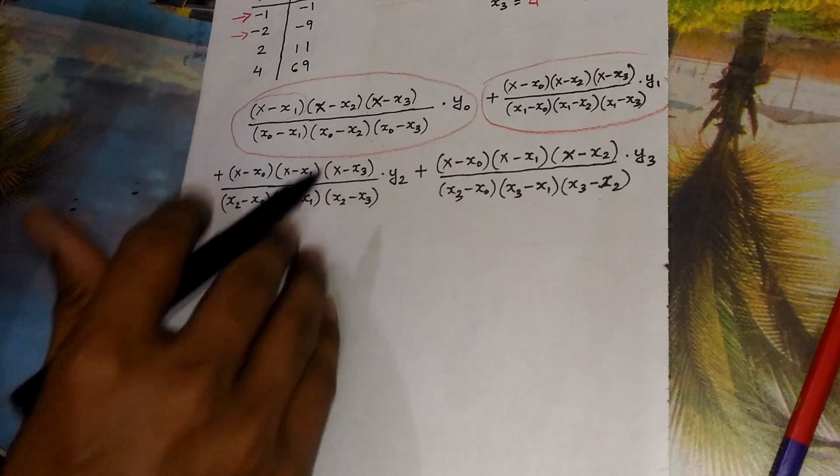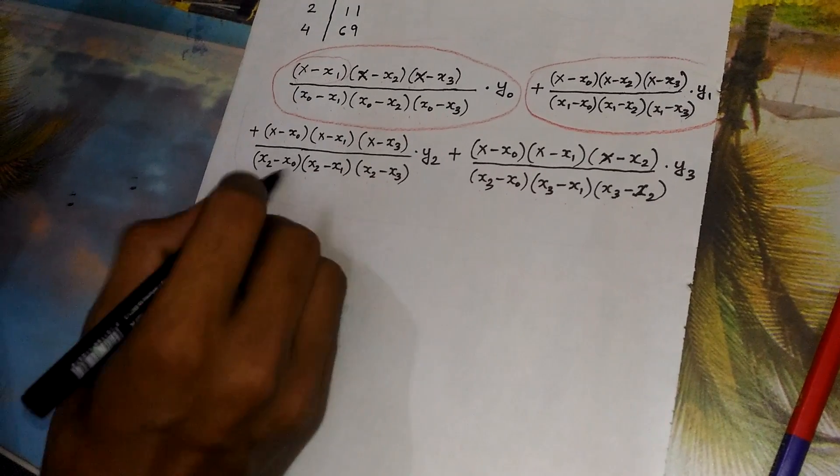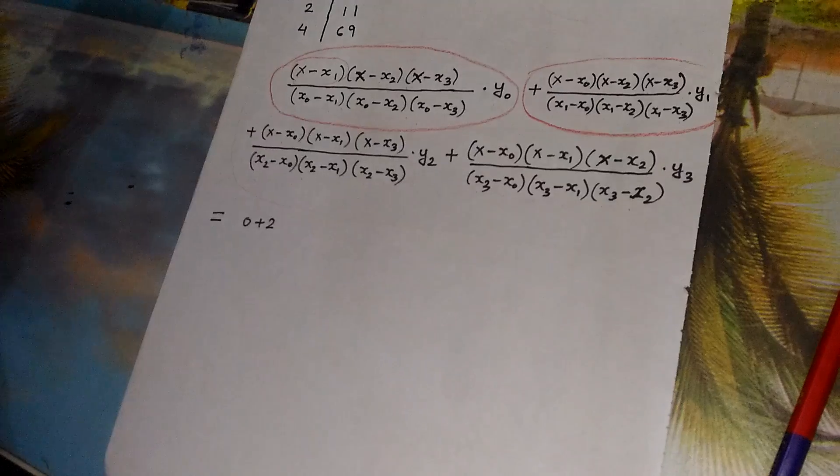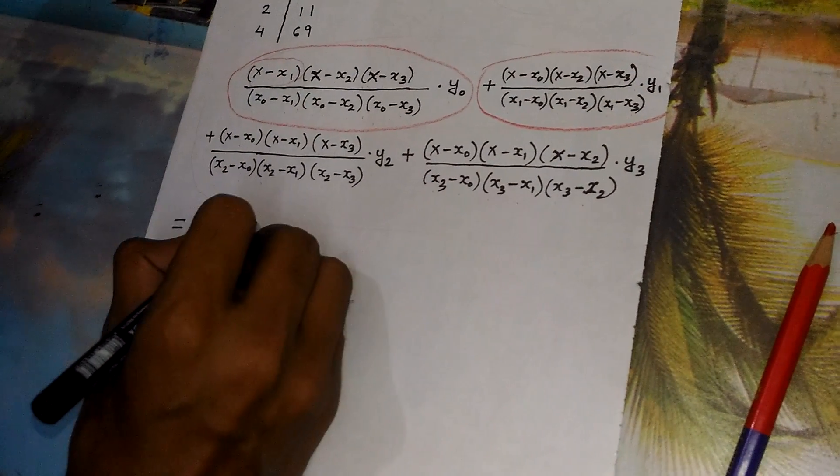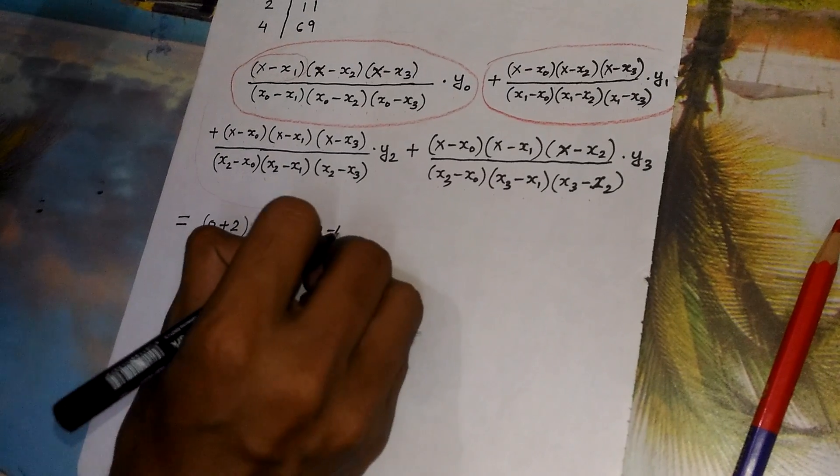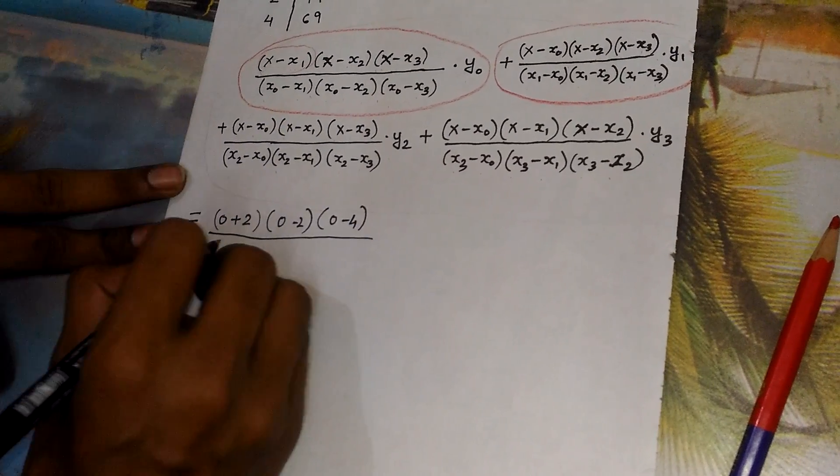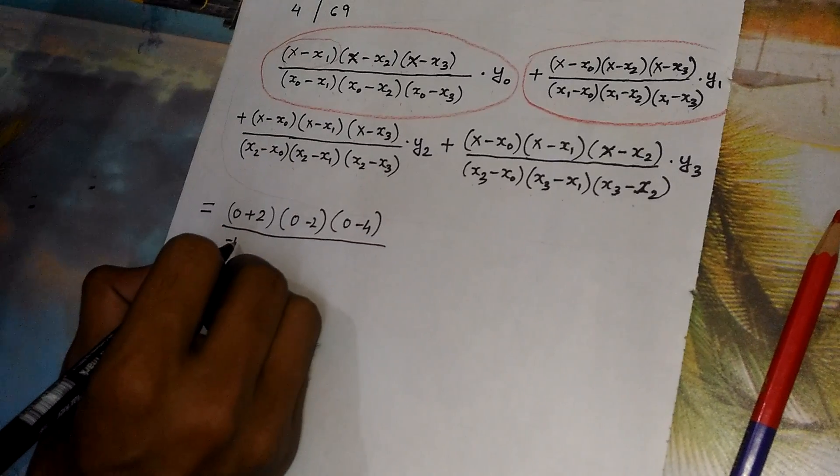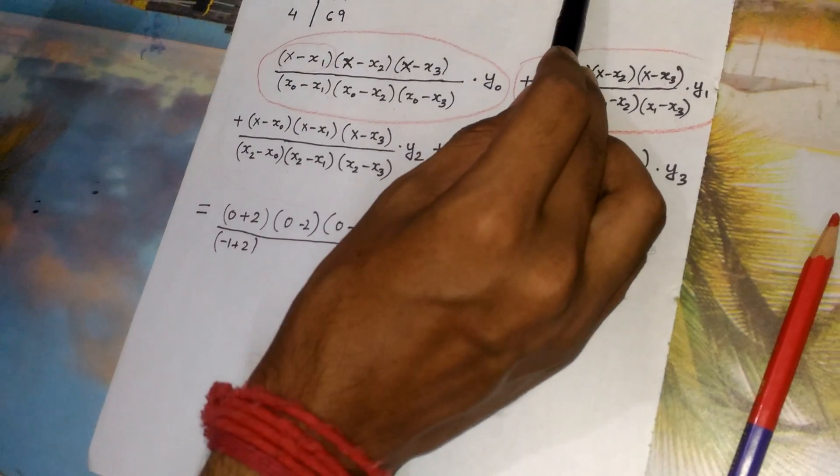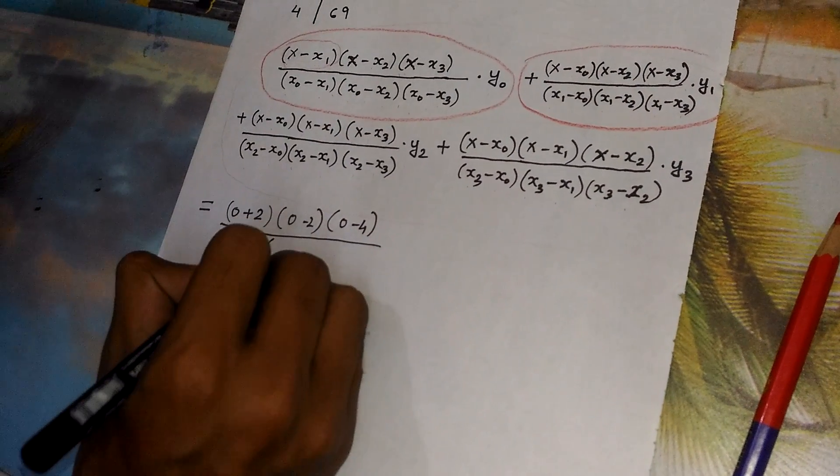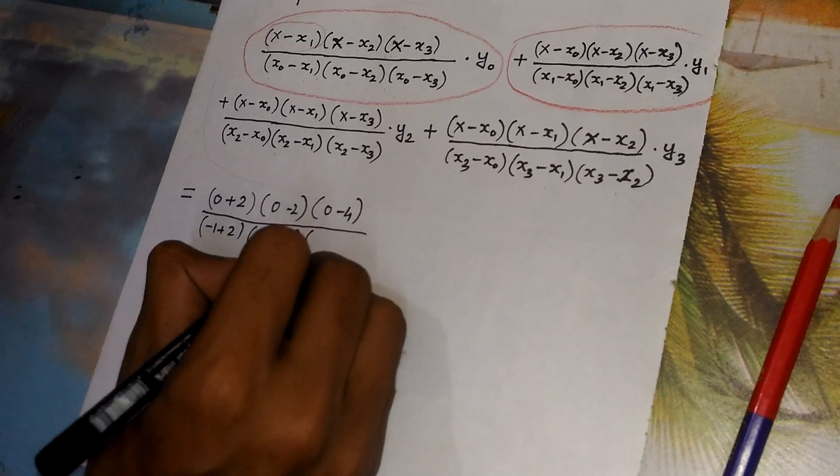So now I get for the first term x minus x1, x minus x2, x minus x3, I get 0 plus 2 since it is minus 2 I have to write plus. Then multiplied by 0 minus 2 into 0 minus 4 divided by minus 1 plus 2, here minus 1 is x0, x0 minus x1.